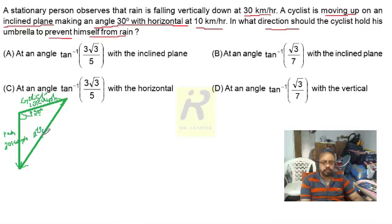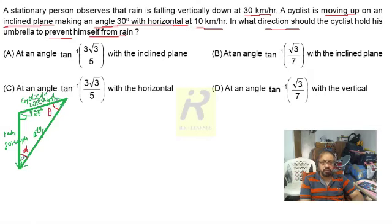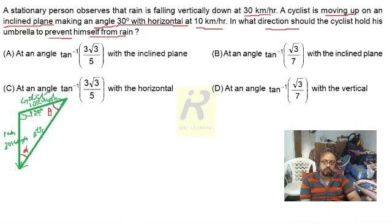This is V_rc — the velocity of the rain with respect to the cyclist. I now identify two more angles: one angle theta and one angle alpha. I need to find these two angles, and let me explain why both are needed.